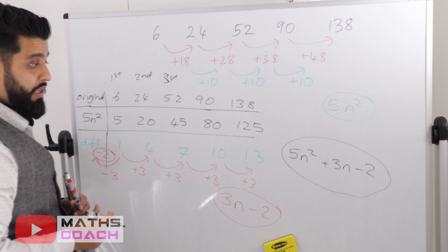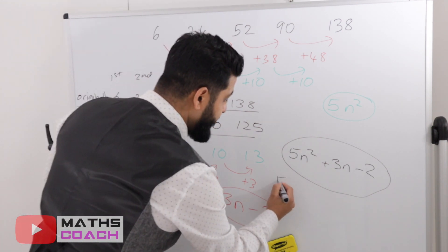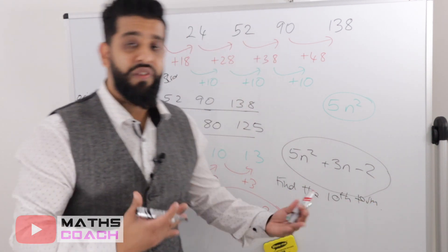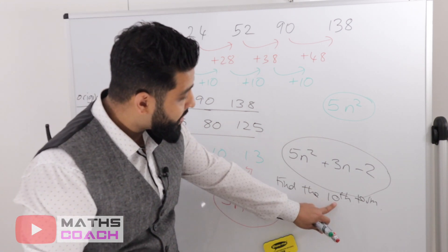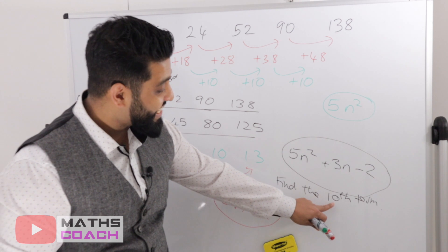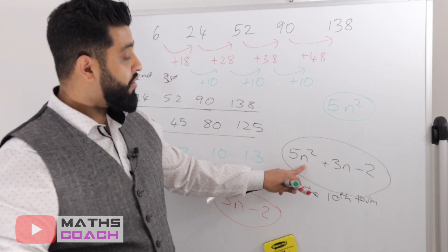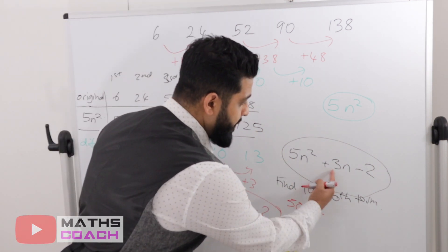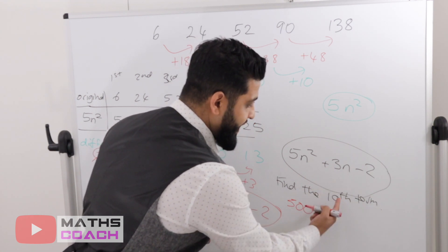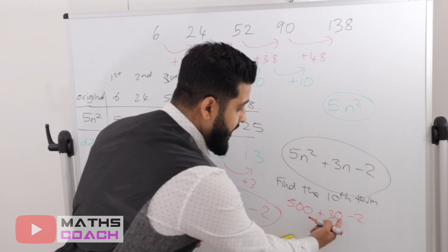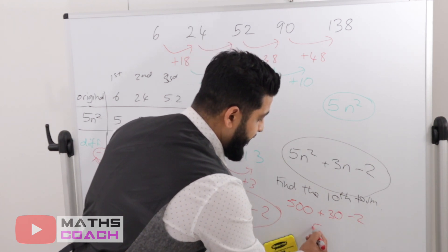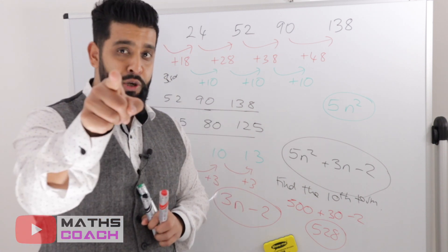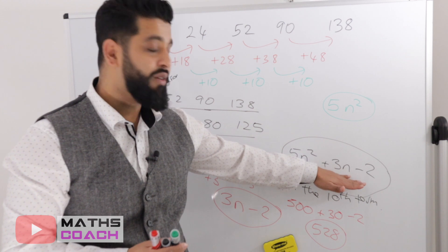As a bonus, let's find the 10th term. Substitute n equals 10: 10 squared is 100, times 5 is 500, plus 3 times 10 which is 30, giving 530, minus 2 is 528. So the tenth term is 528.